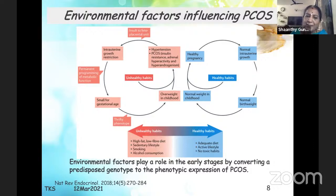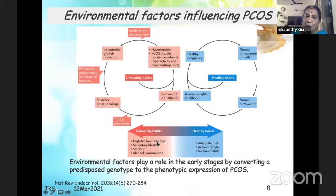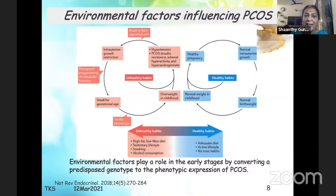Environmental factors play an important role in the early stages by converting a predisposed genotype to the phenotypic expression of PCOS. Unhealthy habits like high-fat, low-fiber diet, sedentary lifestyle, smoking, or alcohol consumption make them prone. When they become pregnant, there can be insult to the fetoplacental unit resulting in fetal growth restriction. This permanently programs the metabolic function, producing a small-for-gestational-age child, and the thrifty phenotype causes them to become overweight in childhood.